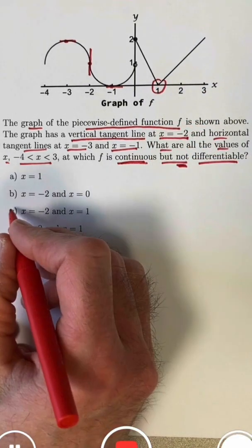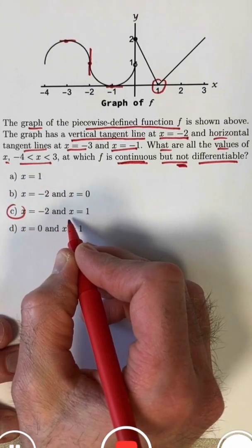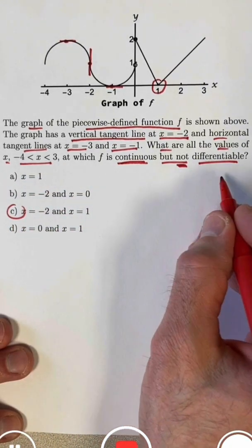Therefore, the answer is C. x equals negative 2 and x equals 1 are places where this function is continuous but not differentiable.